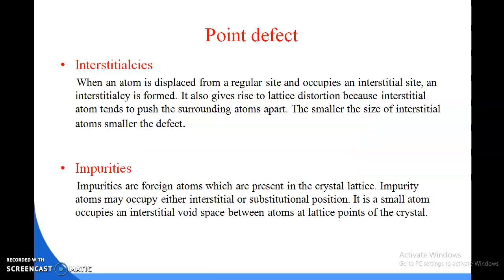Our next point defect is interstitializers. What is interstitializers? When an atom is displaced from a regular site and occupies an interstitial site, an interstitial is formed. It also gives rise to lattice distortion because interstitial atoms tend to push the surrounding atoms apart. The smaller the size of the interstitial atoms, smaller the defect.